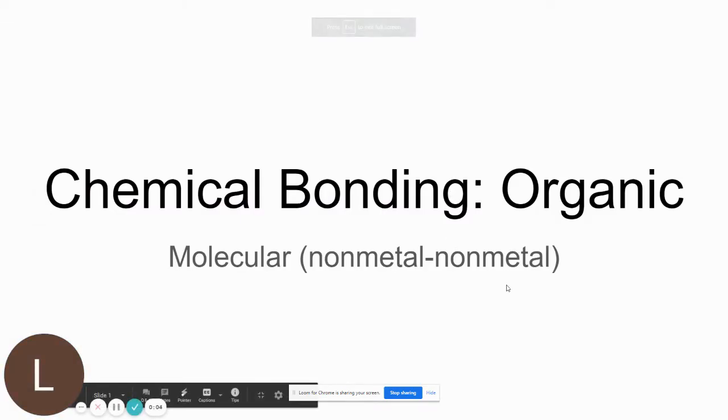Chemical bonding, organic. So this is chapter six and chapter seven in your modern chemistry textbook. I'm just going to focus on the organic molecules, which are the molecular or covalently bonded molecules, which is non-metal, non-metal bonding.